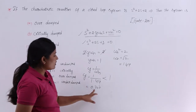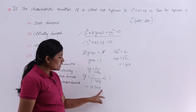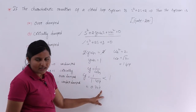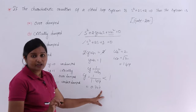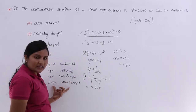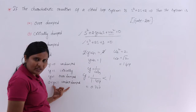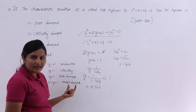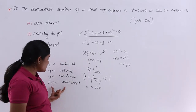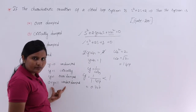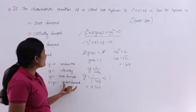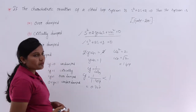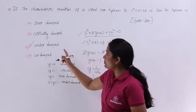Here, the value of zeta is 0.707. This is not equal to 1, not greater than 1, and not equal to 0. The exact condition is that zeta is in between 0 and 1, so 0.707 lies in between 0 and 1 and satisfies the under-damped condition. Therefore, our system is an under-damped system — option C is the correct answer.